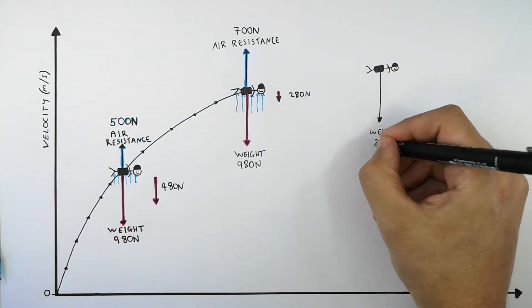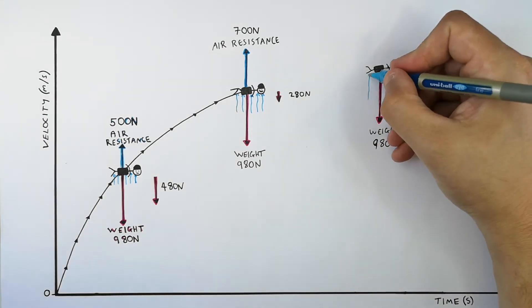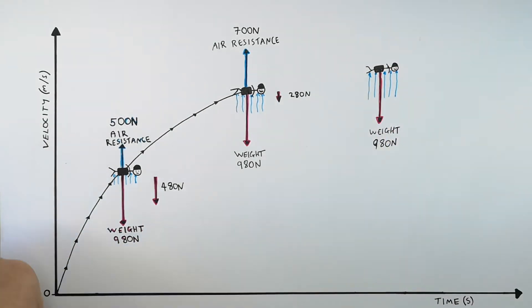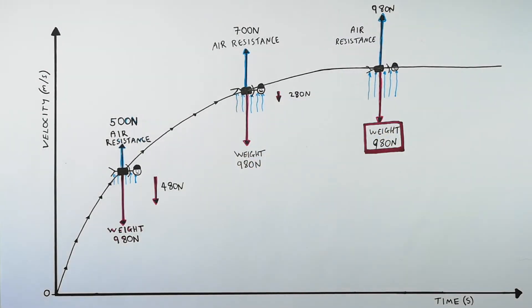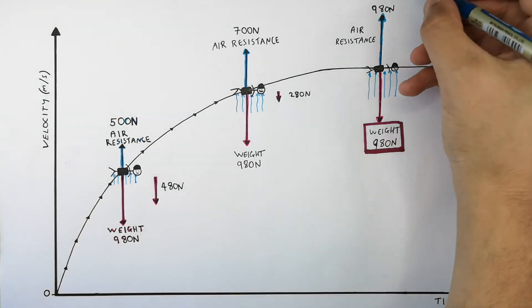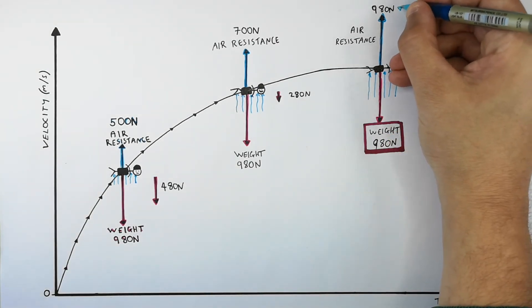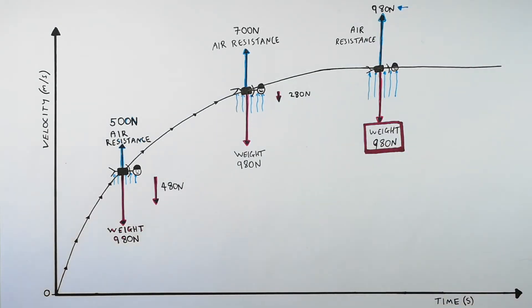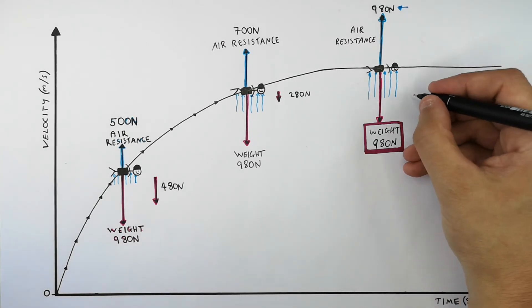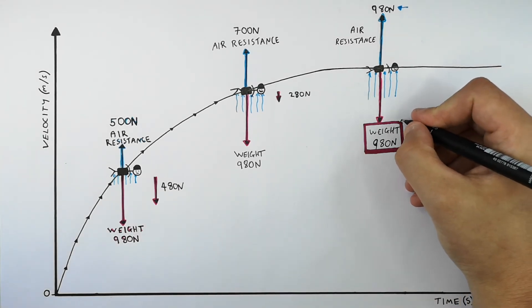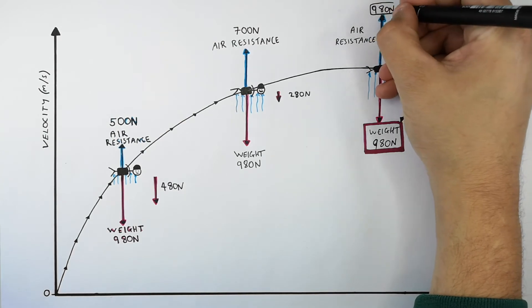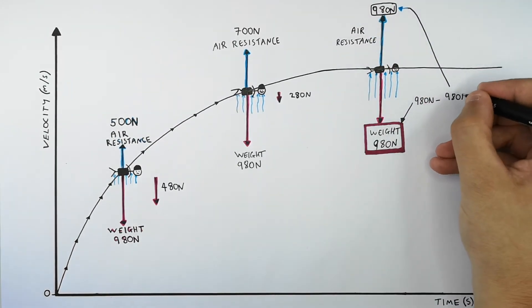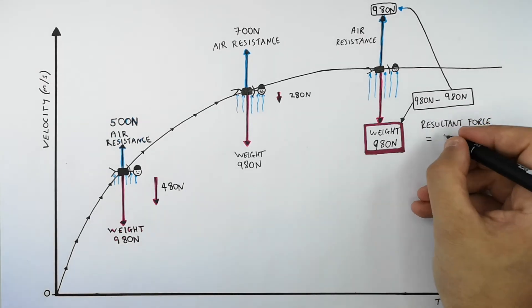The skydiver's weight is still 980 newtons. However, the oppositional frictional force — the air resistance — has now also increased to 980 newtons. So the new resultant force is 980 newtons due to the skydiver's weight minus 980 newtons due to air resistance, which gives a resultant force of 0 newtons.